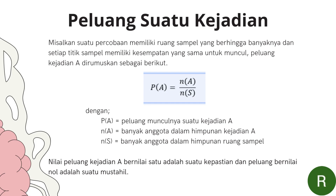Kita misalkan suatu percobaan memiliki ruang sampel yang berhingga banyaknya, dan setiap titik sampel memiliki kesempatan yang sama untuk muncul. Peluang kejadian A ini dirumuskan menjadi P(A) sama dengan N(A) per N(S). Dengan P(A) merupakan peluang munculnya suatu kejadian A, N(A) merupakan banyak anggota dalam himpunan kejadian A, dan N(S) merupakan banyak anggota dalam himpunan ruang sampel.